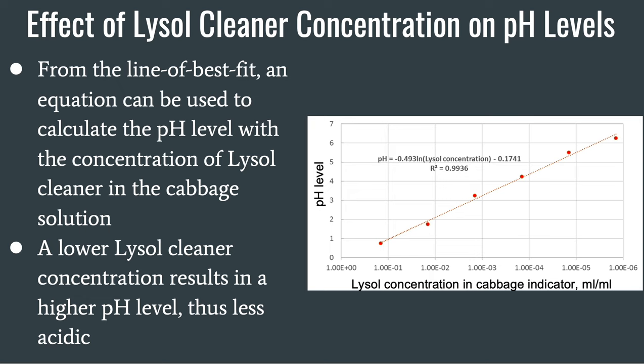Here is the effect of Lysol Cleaner concentration on pH levels. From the line of best fit, an equation can be used to calculate the pH level from the concentration of Lysol Cleaner in the cabbage solution. A lower Lysol Cleaner concentration results in a higher pH level, thus less acidic.